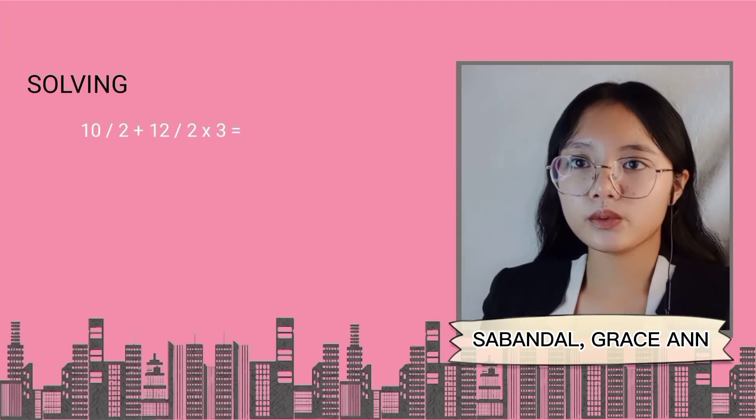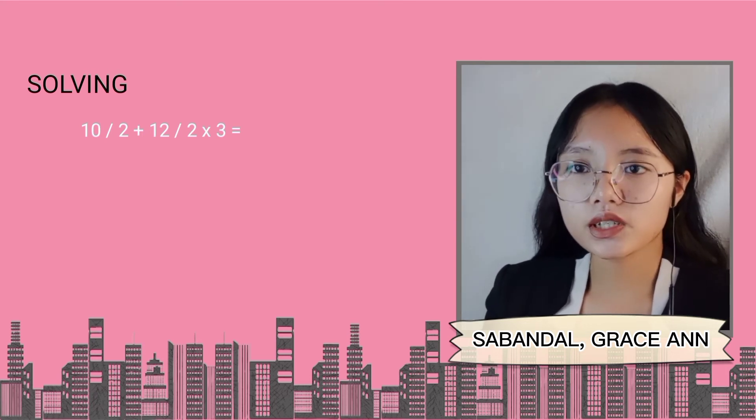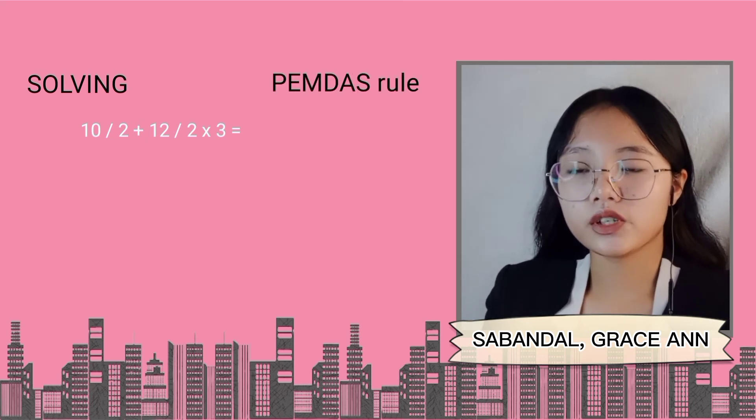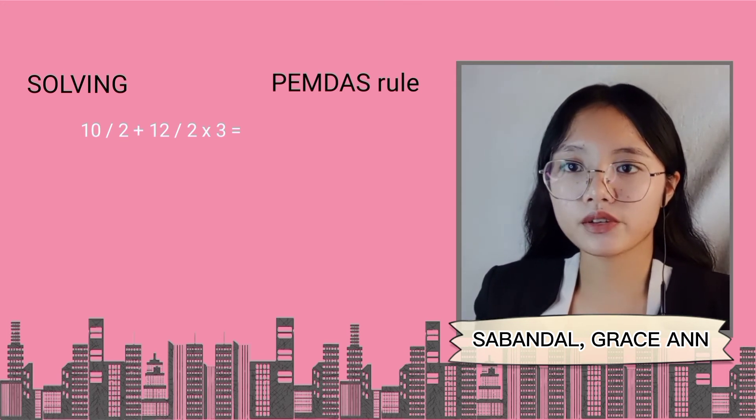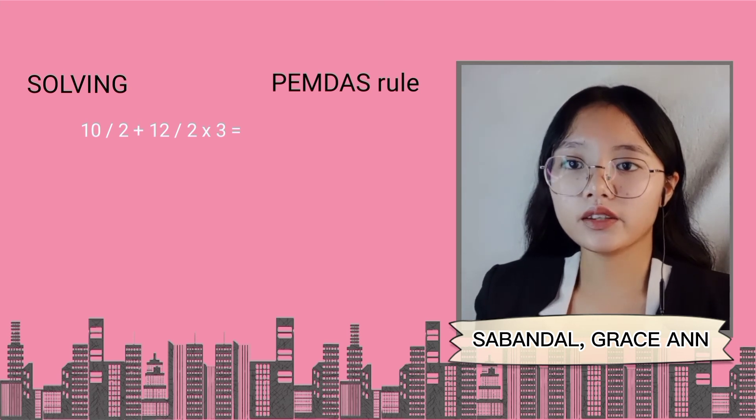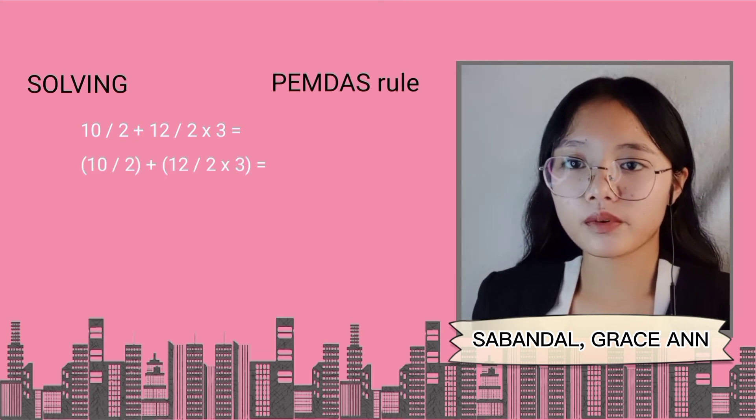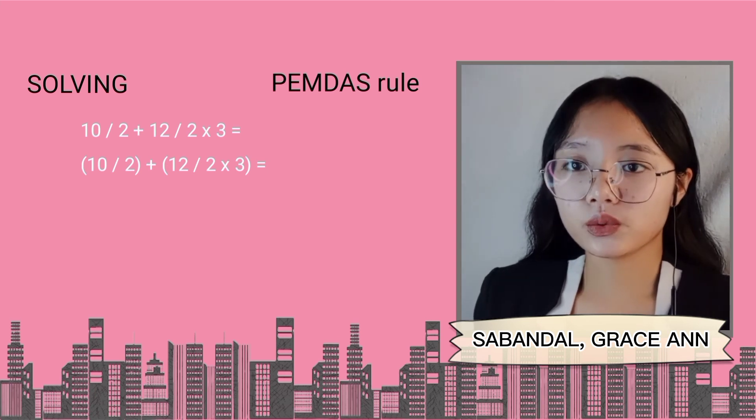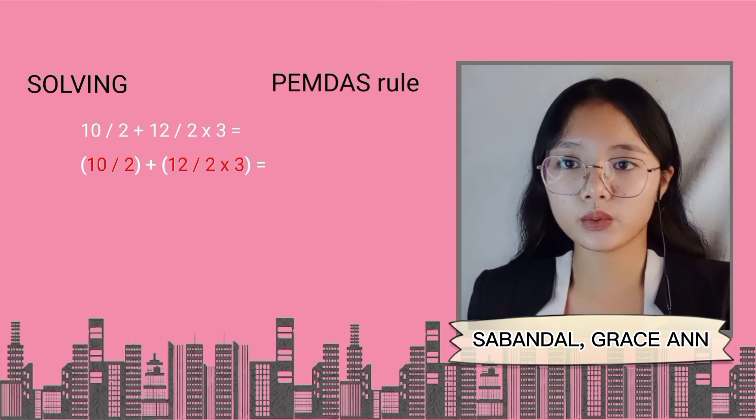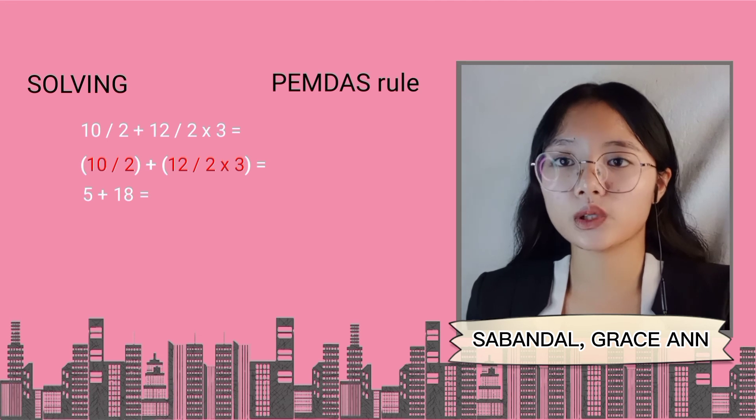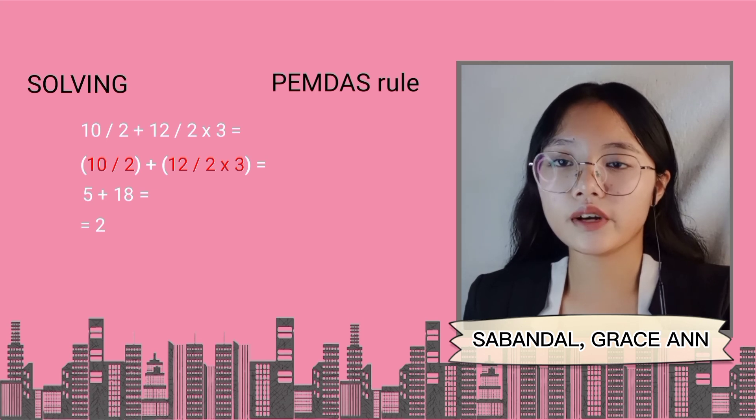Now, we have here example number 2, which we should evaluate. 10 divided by 2 plus 12 divided by 2 times 3. Solution. Using the PEMDAS rule, we need to evaluate the division and multiplication before subtraction and addition. It is recommended that you put parenthesis to remind yourself the order of operation from the given 10 divided by 2 plus 12 divided by 2 times 3. We separate 10 divided by 2 and put parenthesis on it as well as 12 divided by 2 times 3 with parenthesis on it. After that, we have to solve both equations inside the parenthesis. So, 10 divided by 2 is equal to 5. Meanwhile, 12 divided by 2 times 3 is equal to 18. After that, we have now the final equation of 5 plus 18. Adding these two numbers, we have the final answer of 23.